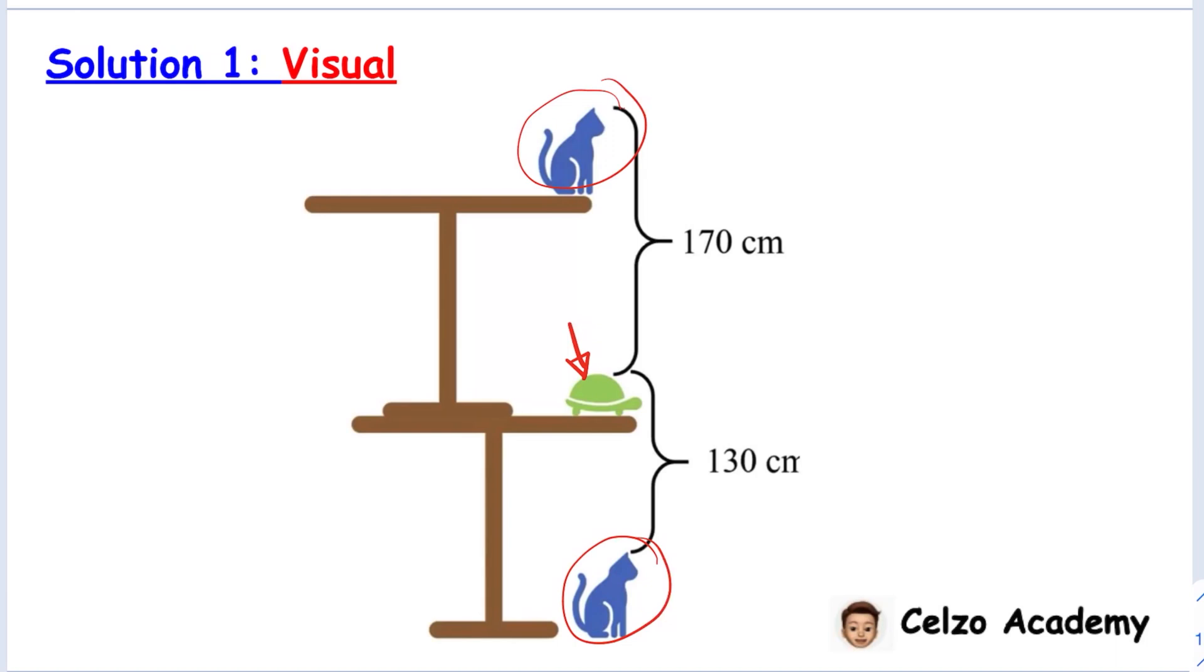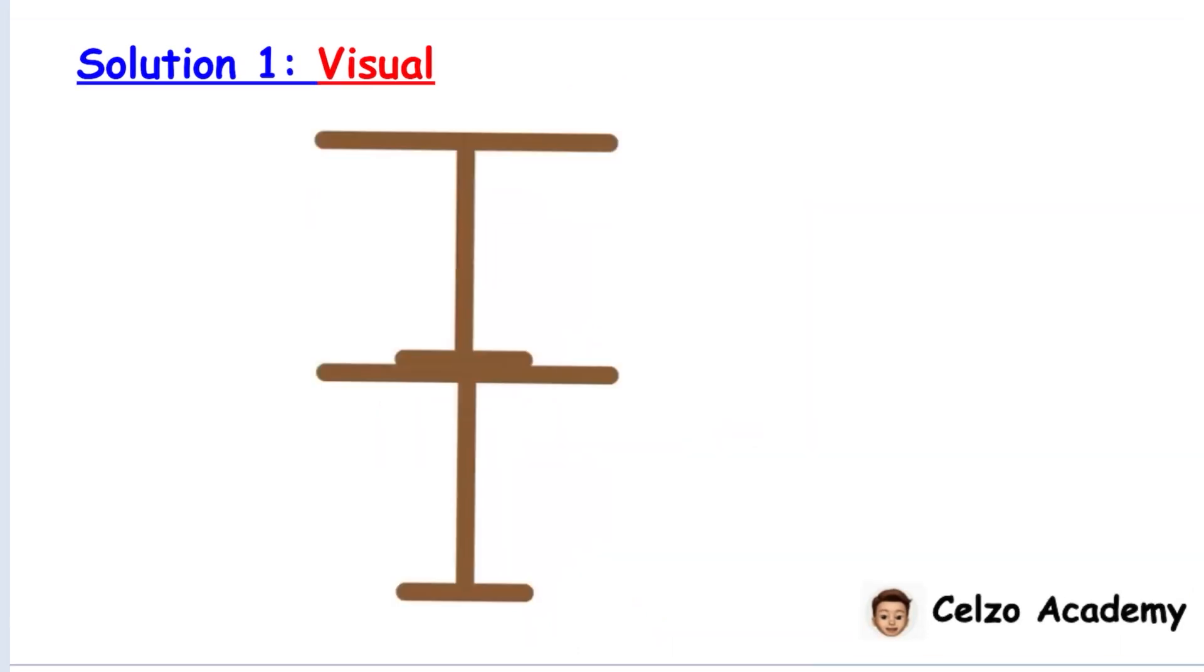If I take out the animals, what do you think is the height of the two tables? 300, right? That's the 170 centimeters and the 130 centimeters. So now the height of the two tables is 300 centimeters.